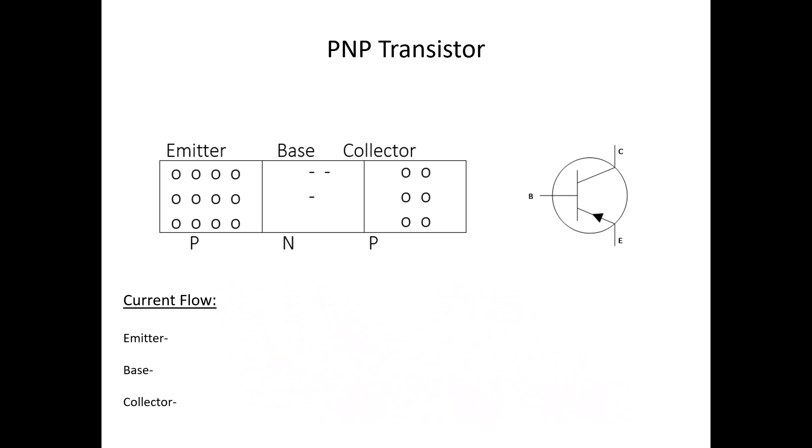We still have to forward bias the base emitter junction, like this, and we still have to reverse bias the base collector junction, like this. Because we use negative supply voltages in the PNP, current flow will actually go from the collector to the emitter, or the most negative to the most positive.